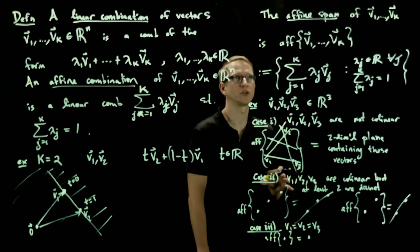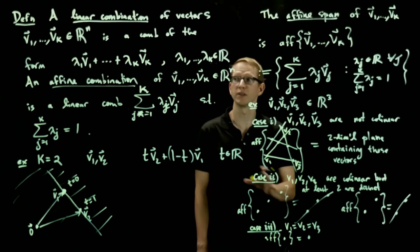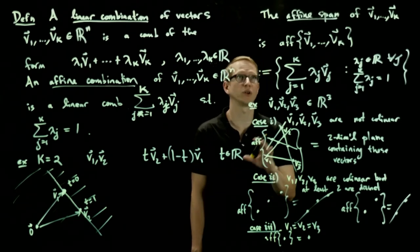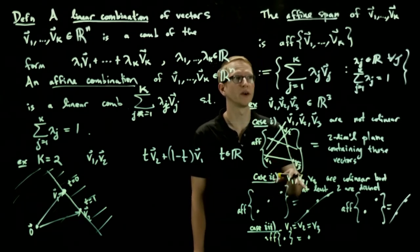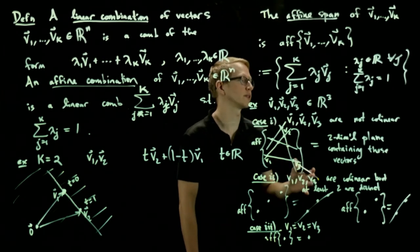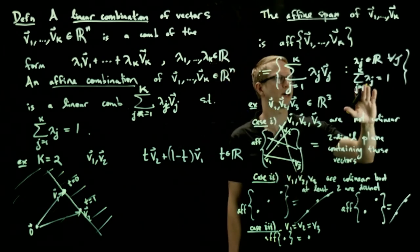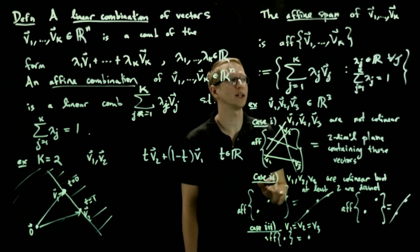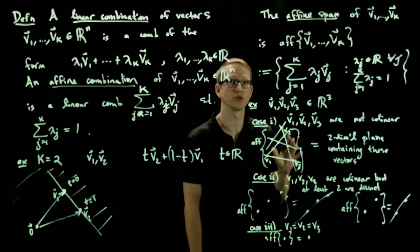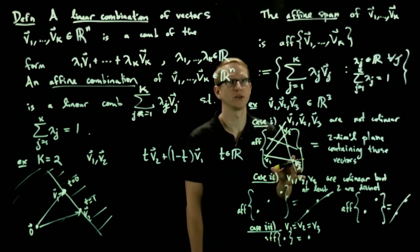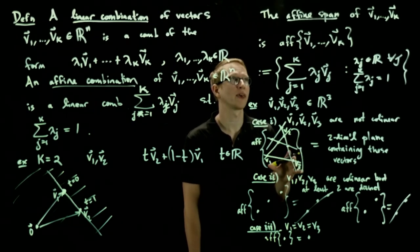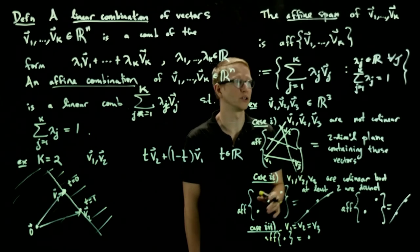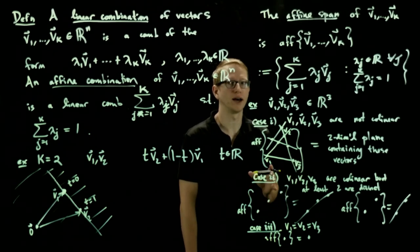So these are some of the basic constructions that you can do with vectors. Besides just taking linear combinations, you can also take affine combinations. There's yet another type, which we won't discuss, is if you require that the sum of these coefficients adds up to one, but they're also not just real numbers, but they're strictly non-negative, so they have to be at least zero. And that's called a convex combination, which is a closely related idea.